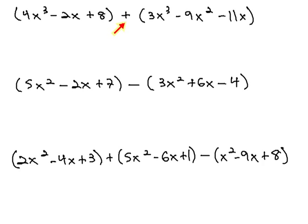We're adding 4x³ minus 2x plus 8 to the polynomial 3x³ minus 9x² minus 11x.